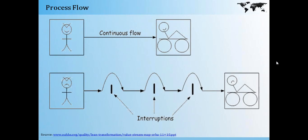If you look at the process flow diagrams in the slide, the top diagram depicts a continuous flow — which is an ideal scenario where there are no interruptions and the customer is satisfied. In the second diagram, there are many interruptions between the vendor and the customer. These could be delays, lead times, or any process that has gone wrong, which will make the customer wait — and these are all non-value-adding services to the customer.